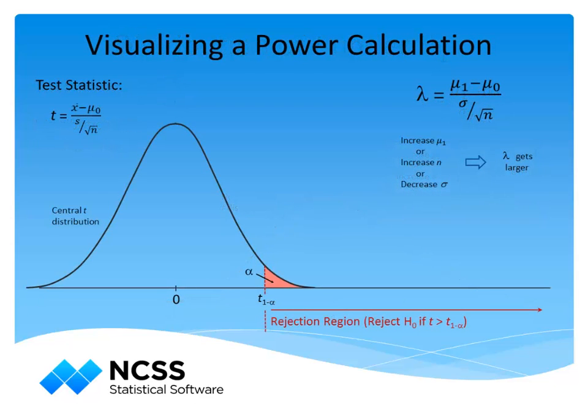If we overlay a specific non-central t-distribution on the central t-distribution with its defined rejection region, we can see the probability of rejecting the null hypothesis when it is false for a given mean, standard deviation, and sample size. This probability is the power of the test. As the non-centrality parameter increases, the power increases.